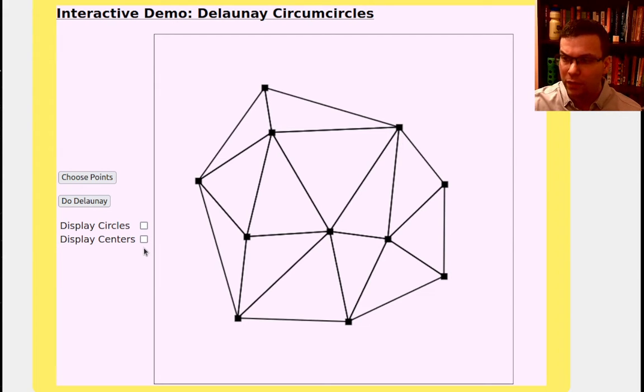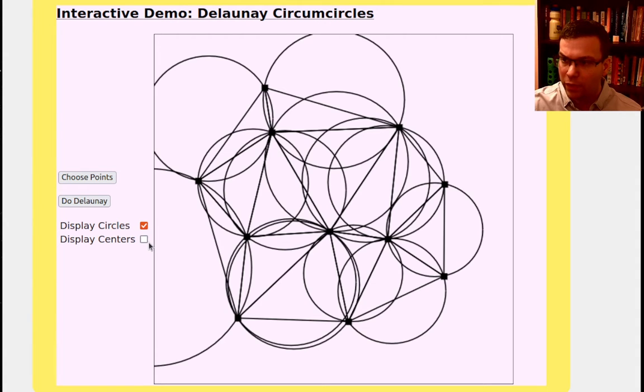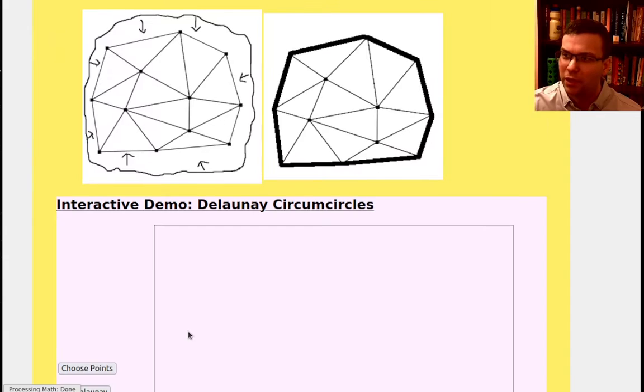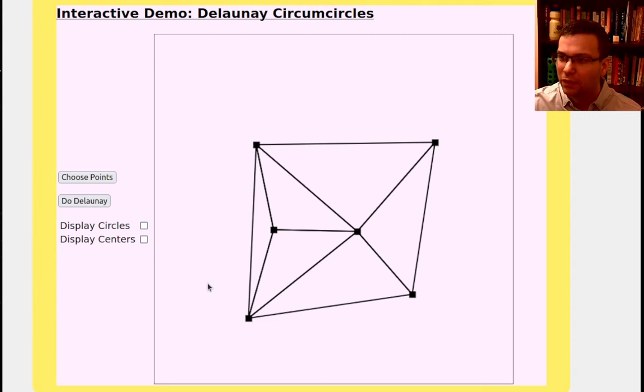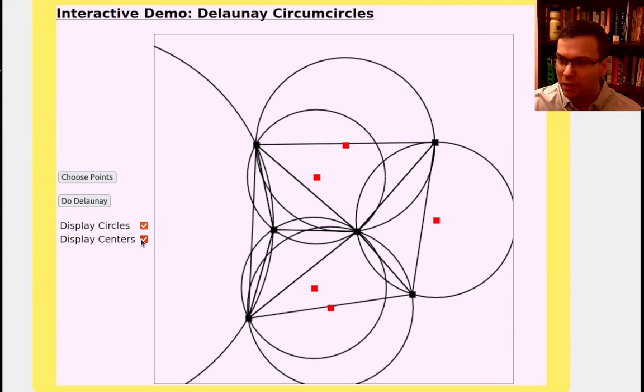One way to define this is, if I take each triangle and I create what's called a circumcircle. Oh, this is a bit busy. Maybe I'll, let me do a simpler one here. Let's try this. So if I draw a circumcircle around a triangle. The Delaunay triangulation, so a circumcircle, it's just the circle that you would draw that circumscribes the triangle. So I'm showing the centers here in red.